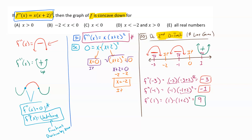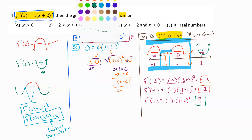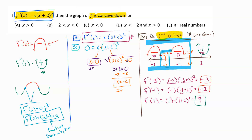So where is it concave down? It is concave down from our inflection point at zero and everything in that direction — meaning everything less than zero. Even though there is a possible inflection point at negative two, it never changed concavity there, so that doesn't break the interval. The answer is x is less than zero, which is option C.